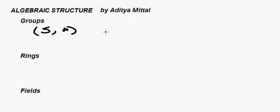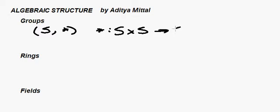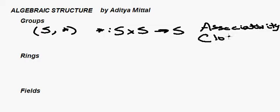In a group, under this operator, it takes one member of the set, you cross it with another member of the set, and you get some member of the set back. Groups satisfy axioms like associativity and closure. Closure means that if you are crossing two members of this set, you'll get one member of the set back.